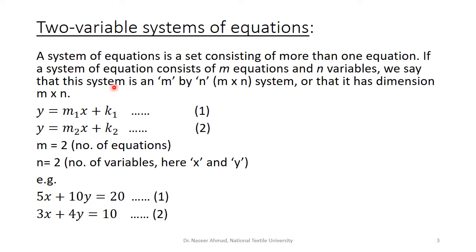The first topic is two-variable systems of equations. A system of equations is a set consisting of more than one equation. If a system of equations consists of m equations and n variables, we say that this system is an m by n system, or that it has dimension m by n.